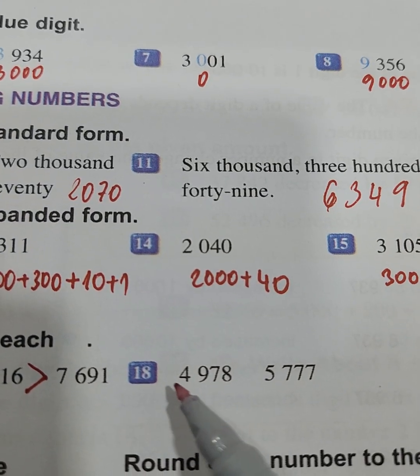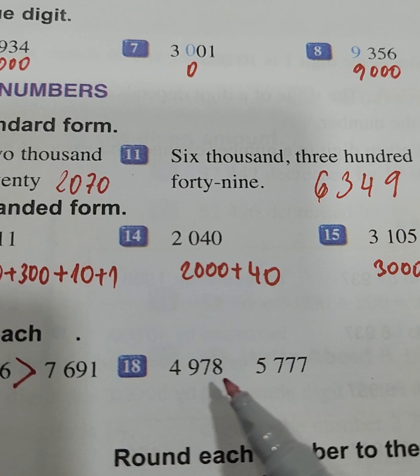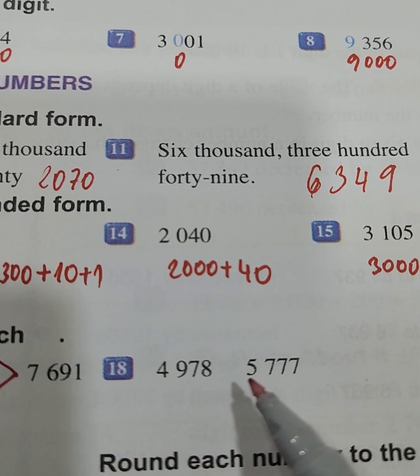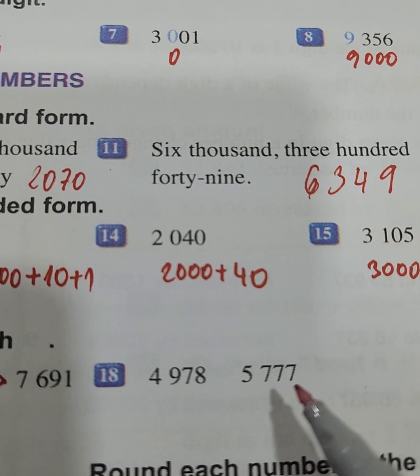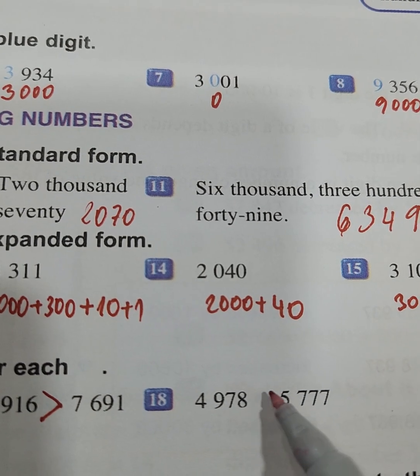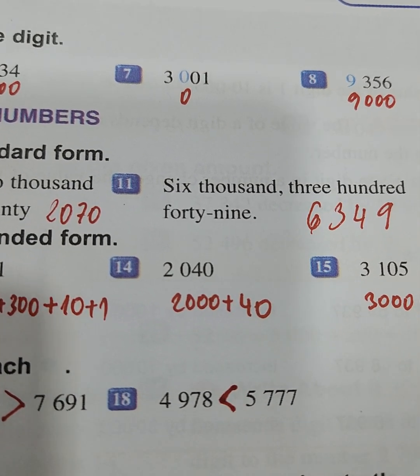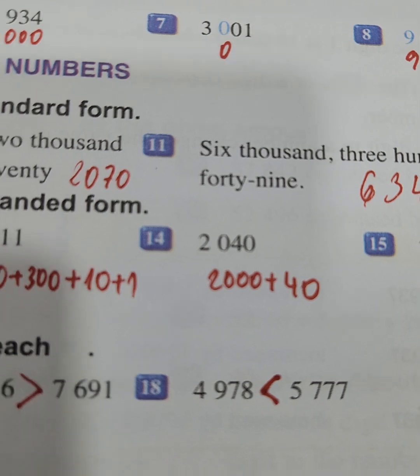After, we have 4978 and 5777. We know that 5000 is greater than 4978.